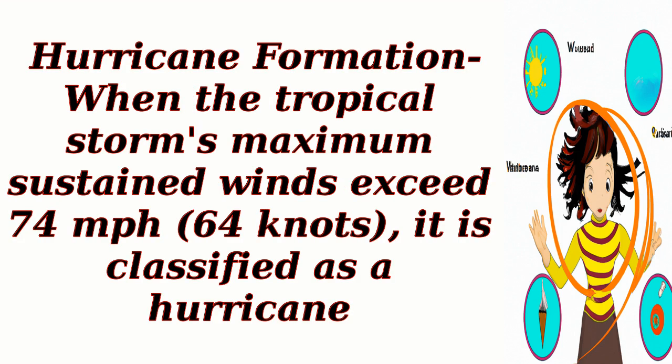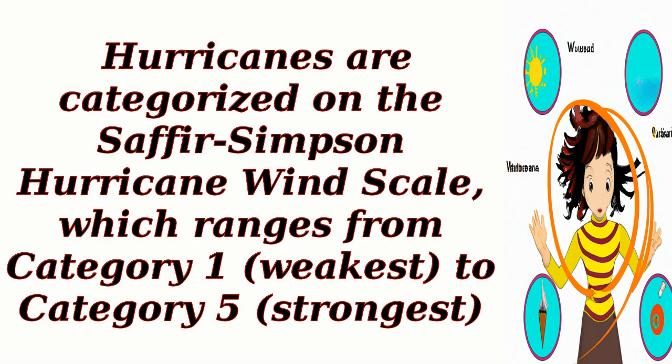Hurricane formation: when the tropical storm's maximum sustained winds exceed 74 miles per hour (64 knots), it is classified as a hurricane. Hurricanes are categorized on the Saffir-Simpson hurricane wind scale, which ranges from Category 1, the weakest, to Category 5, the strongest.